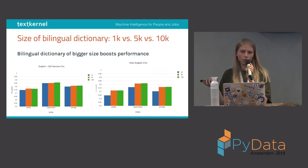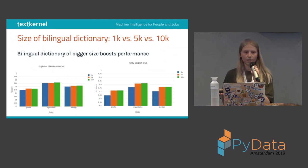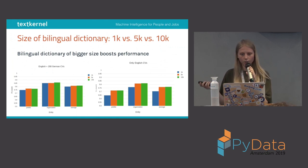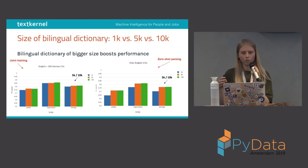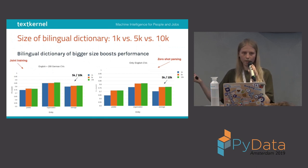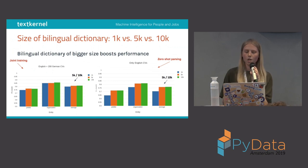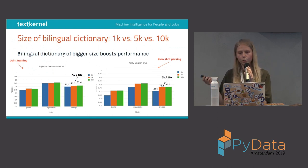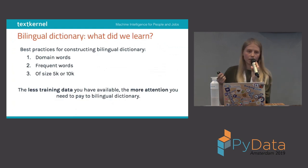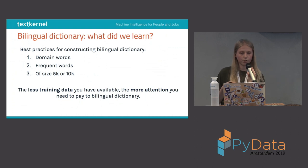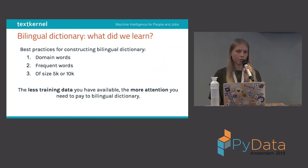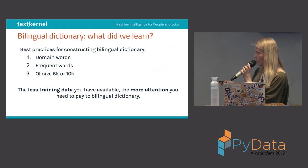For dictionary size, we experimented with 1,000, 5,000, and 10,000 words. We found that 5,000 and 10,000 gave almost the same results in both joint training and zero-shot, so you may not even need 10,000 words — 5,000 is enough. Both outperformed 1,000 words, with a bigger difference in zero-shot. Our experiments with bilingual dictionary showed that you should use domain words, frequent words, and a size of 5,000 to 10,000. The less training data you have available, the more attention you need to pay to the bilingual dictionary.